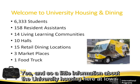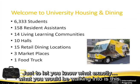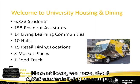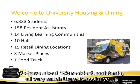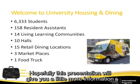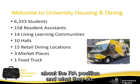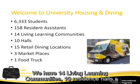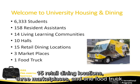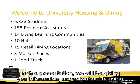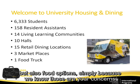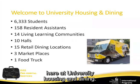A little information about university housing here at Iowa. We have about 6,333 students living on campus, about 158 residence assistants who are students there to assist you. Later in this presentation we'll give you more information about the RA position. We have 14 living learning communities, 10 residence halls, 15 retail dining locations, 3 marketplaces, and one food truck. This presentation will cover both housing and food options, as all of those come under University Housing and Dining.